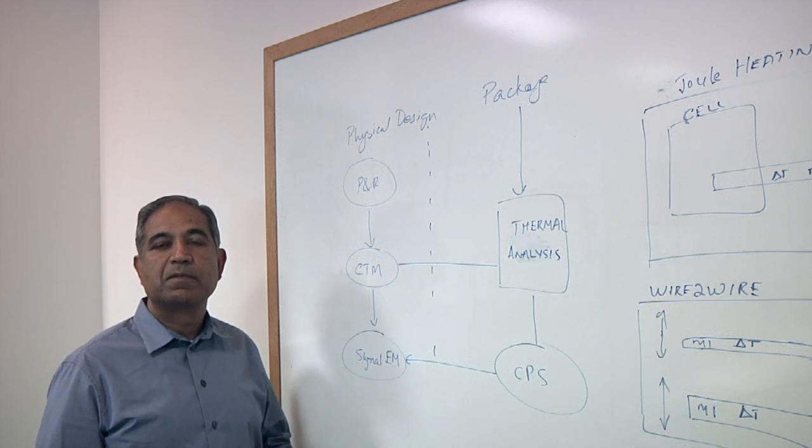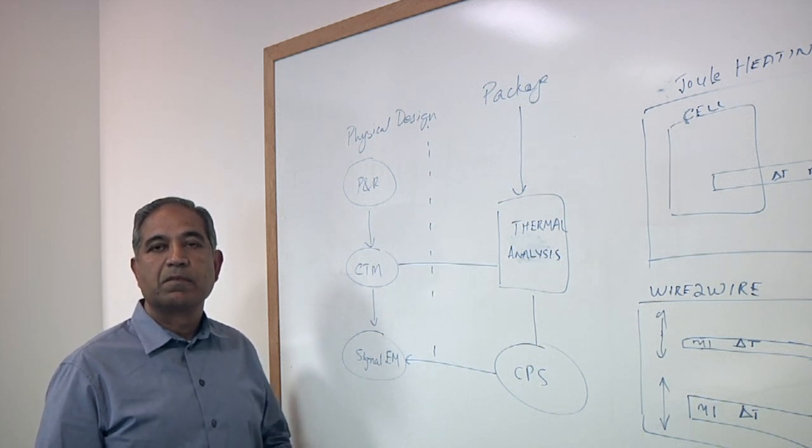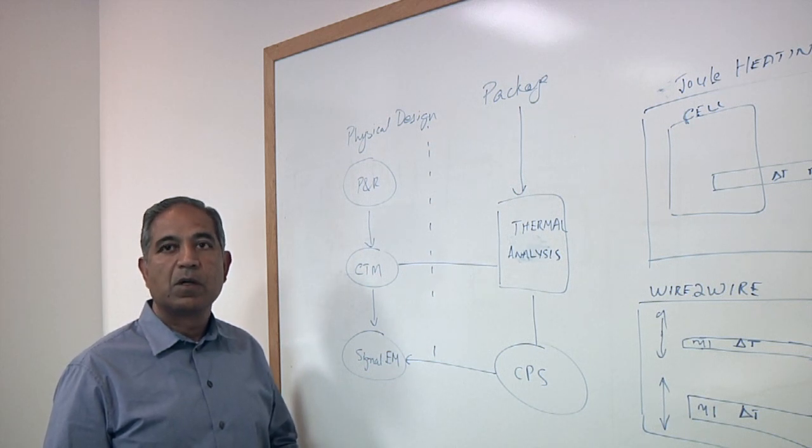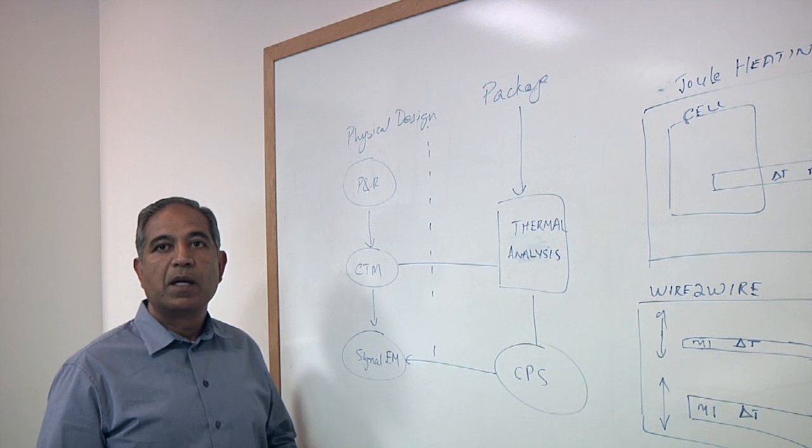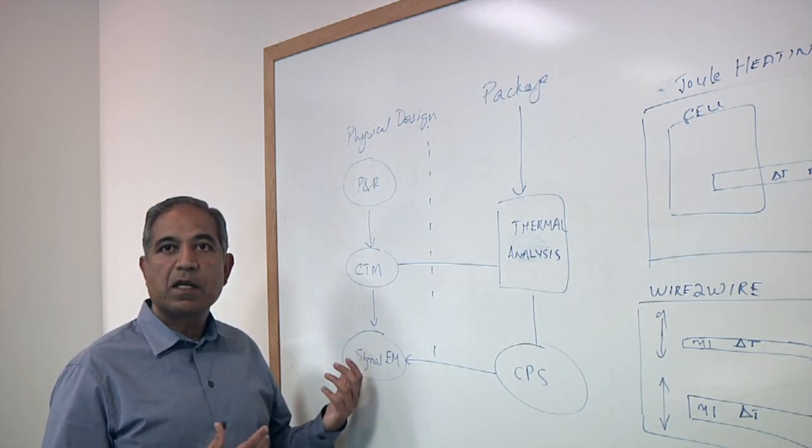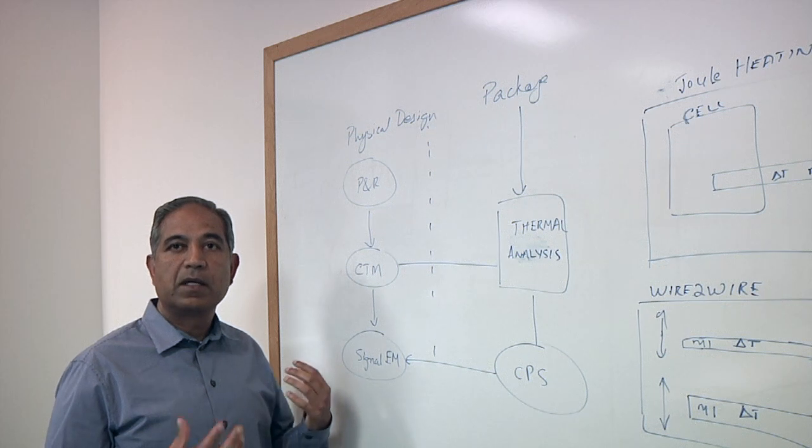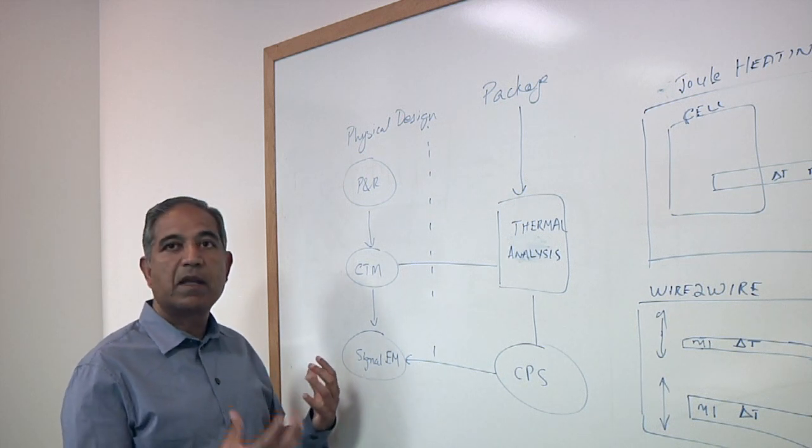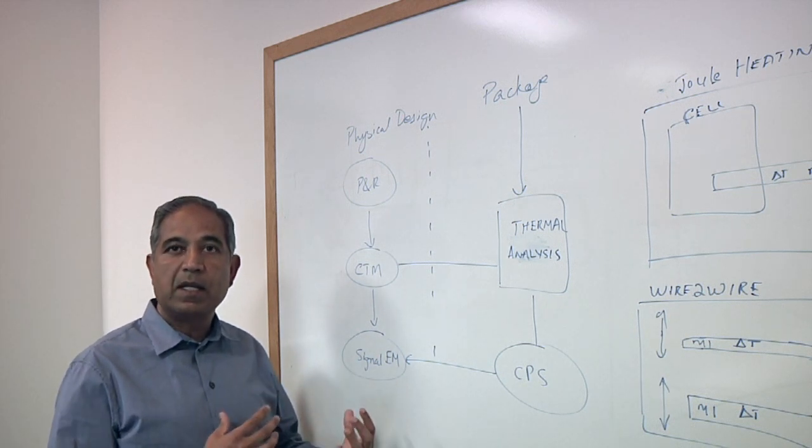There are some things that are out of the designer's control, though, such as, for example, variation, which is getting worse at 5 nanometers. How do you account for that? Because the lines and spaces may not print exactly the way that you expect them to. That's correct. So there are statistical models that will take the variation into account during the timing analysis and power analysis. So these effects can be viewed in that area as well.